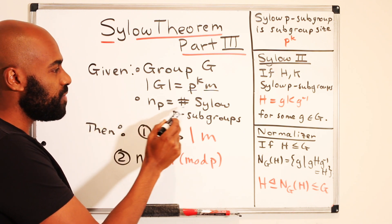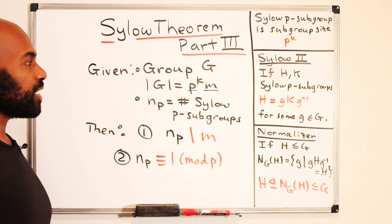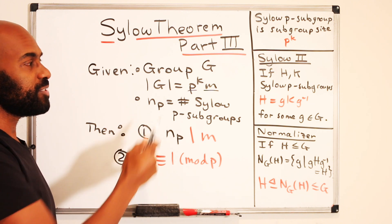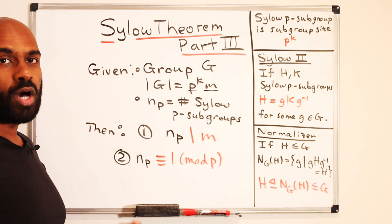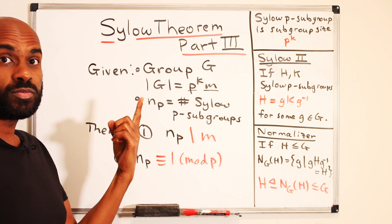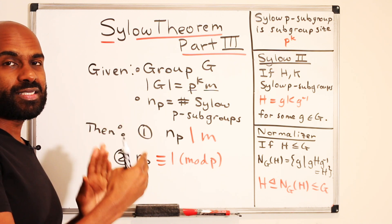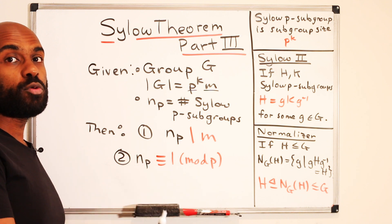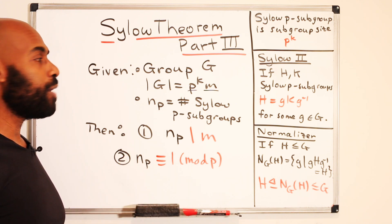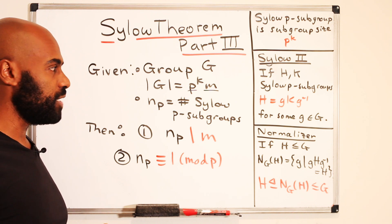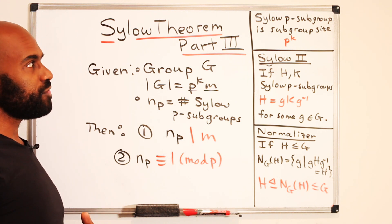We let n_p be the number of Sylow p-subgroups — those are subgroups of G that have size p^k. The idea behind the Sylow theorems is to find these Sylow p-subgroups for different primes p and then piece them together to figure out what's going on with the actual group G. Let's recap some of the things we discussed in previous videos.